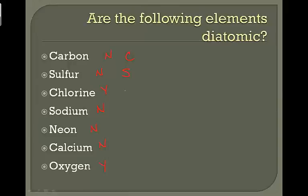Chlorine, whenever we see chlorine, we assume it to be Cl2 because chlorine is diatomic. Sodium is Na, neon is Ne, calcium is Ca. Oxygen will be O2 because it's a diatomic molecule.